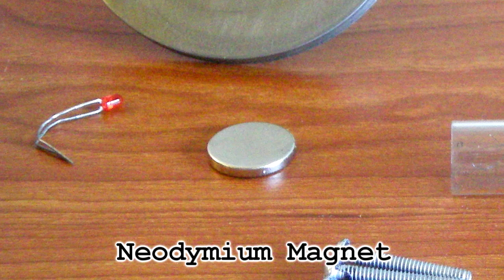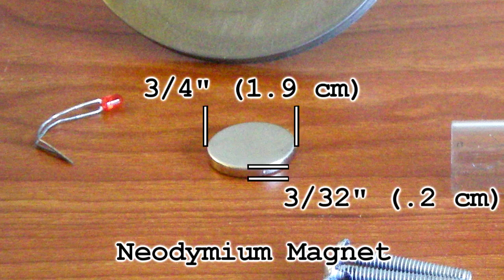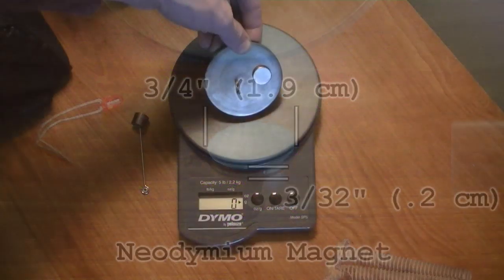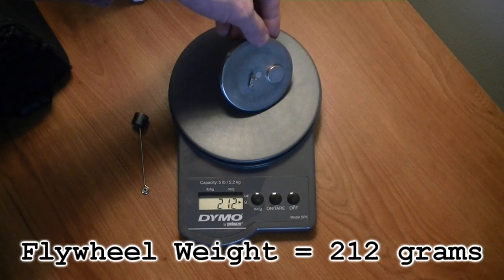This neodymium magnet which is used to balance the weight of the graphite piston is about 3 quarters of an inch in diameter and is 3 30 seconds thick. The weight of the whole flywheel is 212 grams.